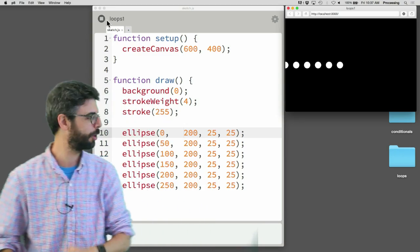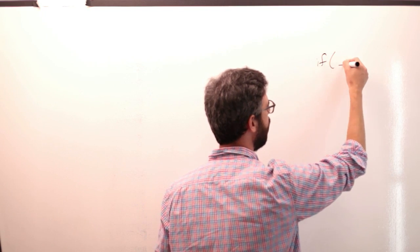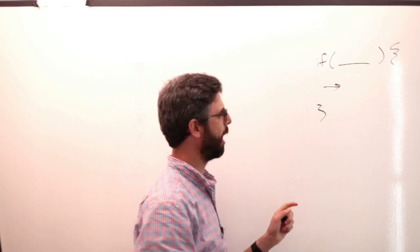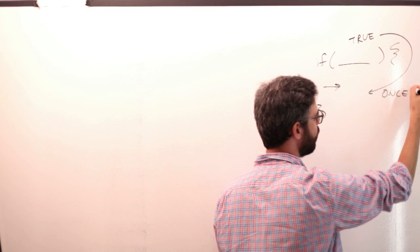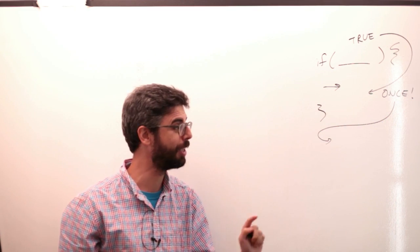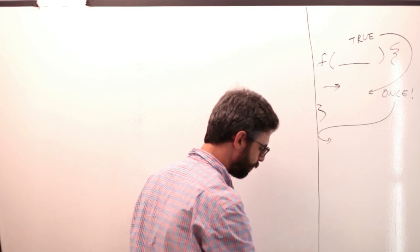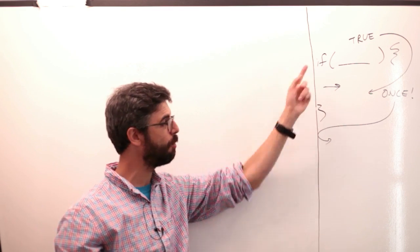A repeat loop is a control structure, and in a previous video I looked at another control structure known as a conditional statement. That control structure looks like this: if, boolean expression, open curly bracket, close curly bracket. If this is true, this code is executed once and then we go to the next line of code. This is how the conditional statement control structure works. The control structure of a loop is written just like the if statement but with a different keyword.